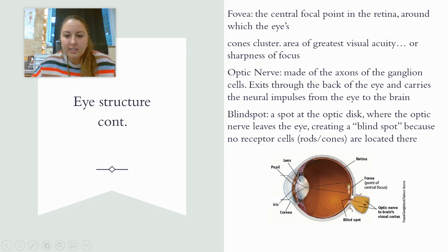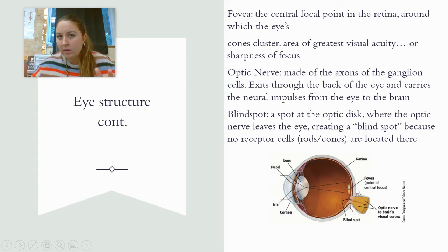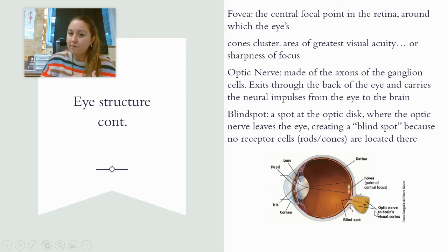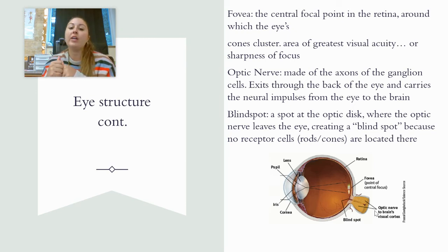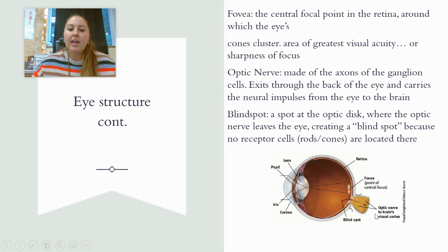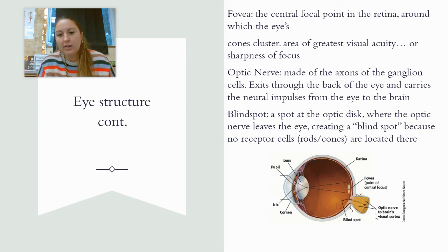In the retina is the fovea — the point of central focus, where most of our cones are located. We have way more rods in our eye than cones, because our cones are really just located right around the fovea. The optic nerve is made up of those ganglion cells' axons. There is a spot called the optic disc where the optic nerve leaves the eye, and there are no cells there — which creates a blind spot. We'll look at your blind spot together in class.